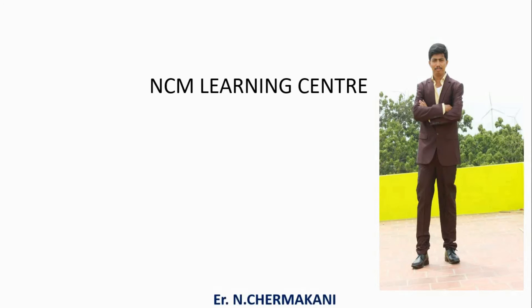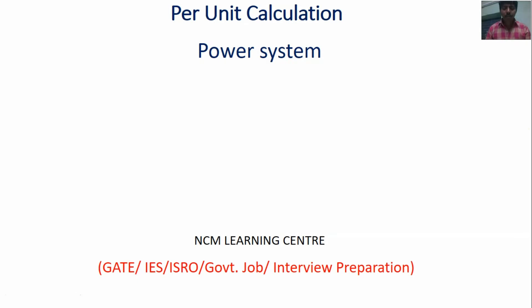NCM Learning Center. Good morning friends. Now I am going to discuss about per unit calculations. In a power system, all the parameters — generating power, generating voltage, current, and impedance — are all represented by a unique value per unit, because representing all parameters in per unit makes it very easy to analyze the power system.